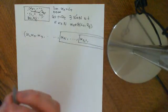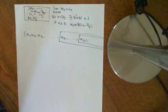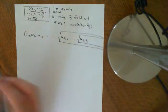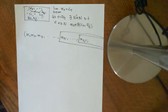That proves that a sequence can converge to only one limit. It is simply impossible for a sequence to have more than one limit in a metric space. Okay, that'll do for this video.